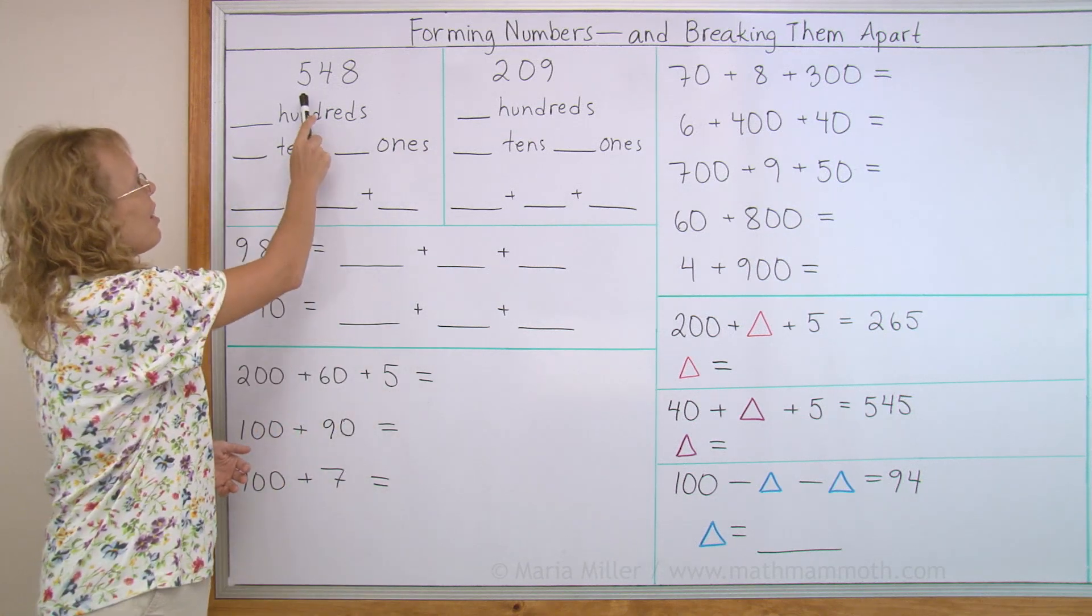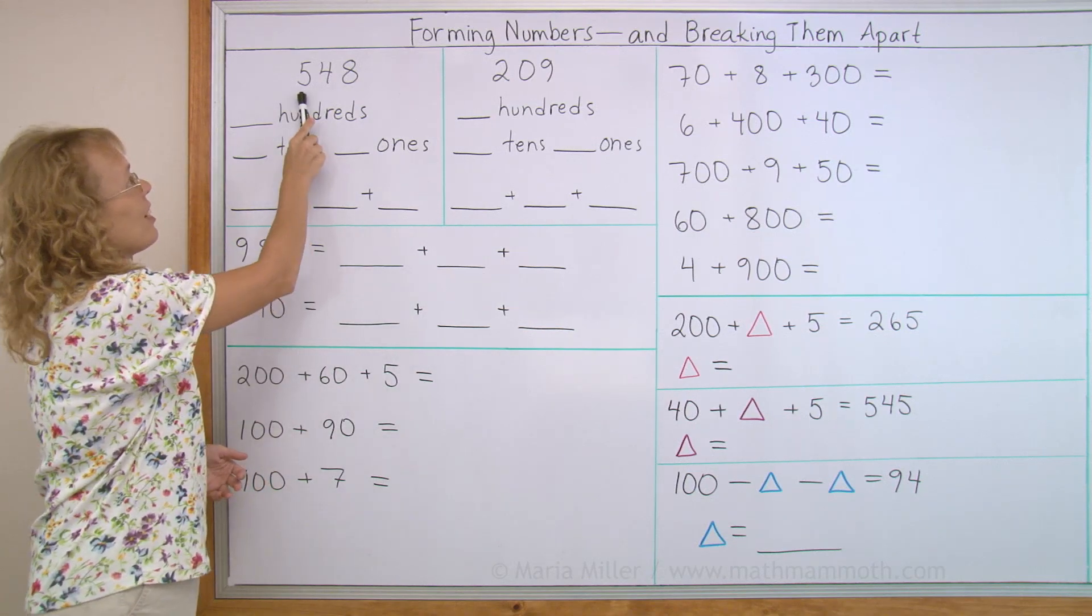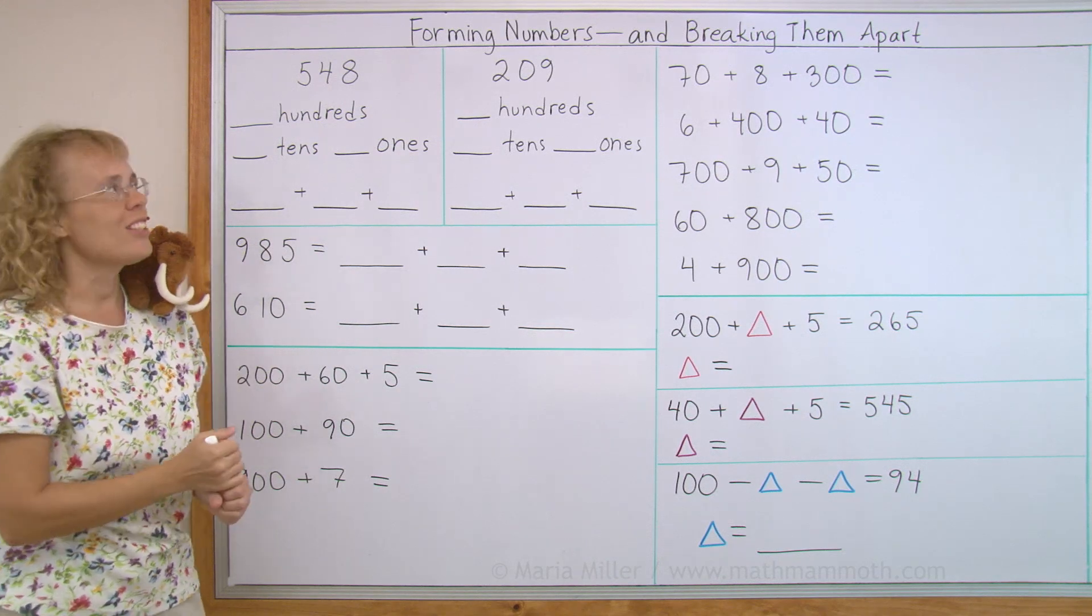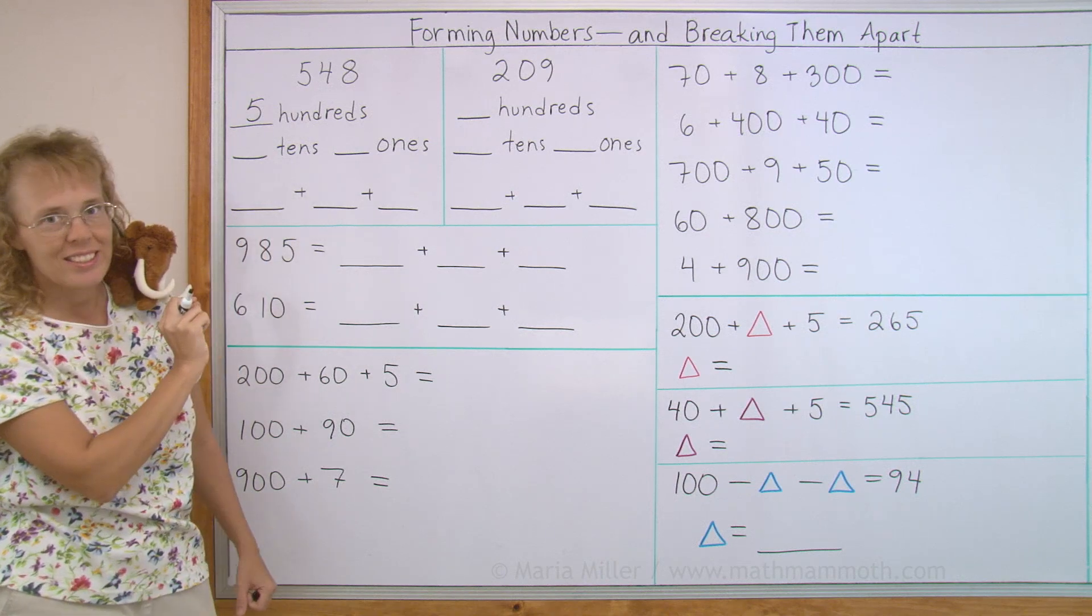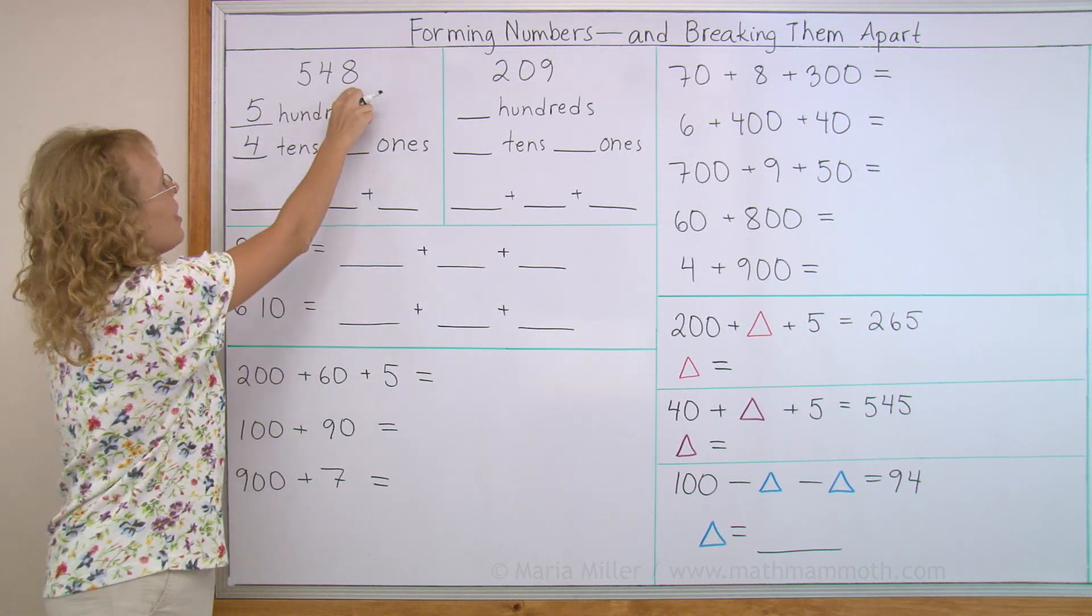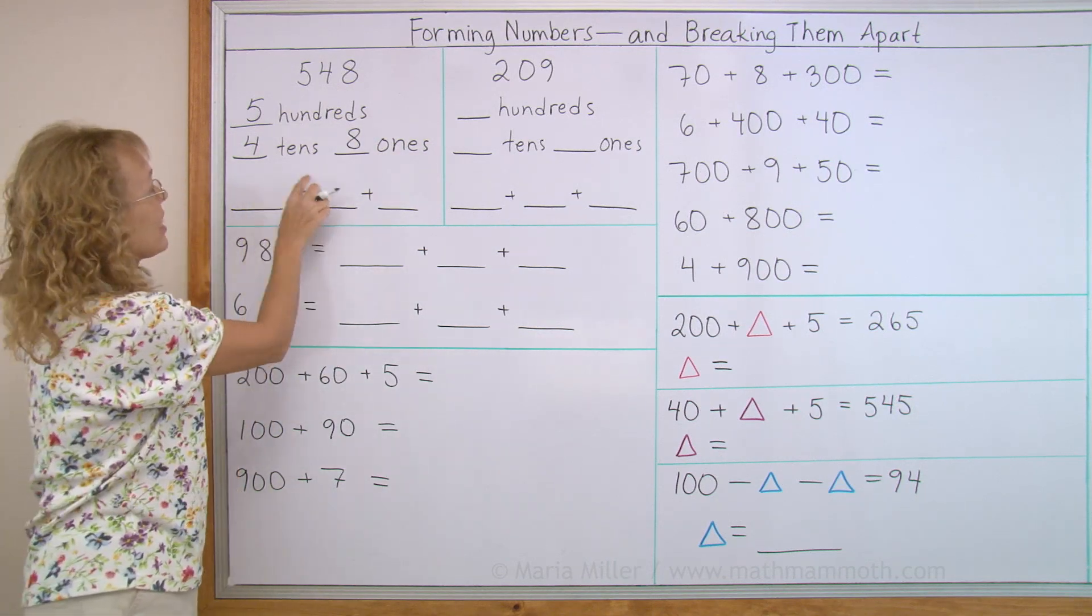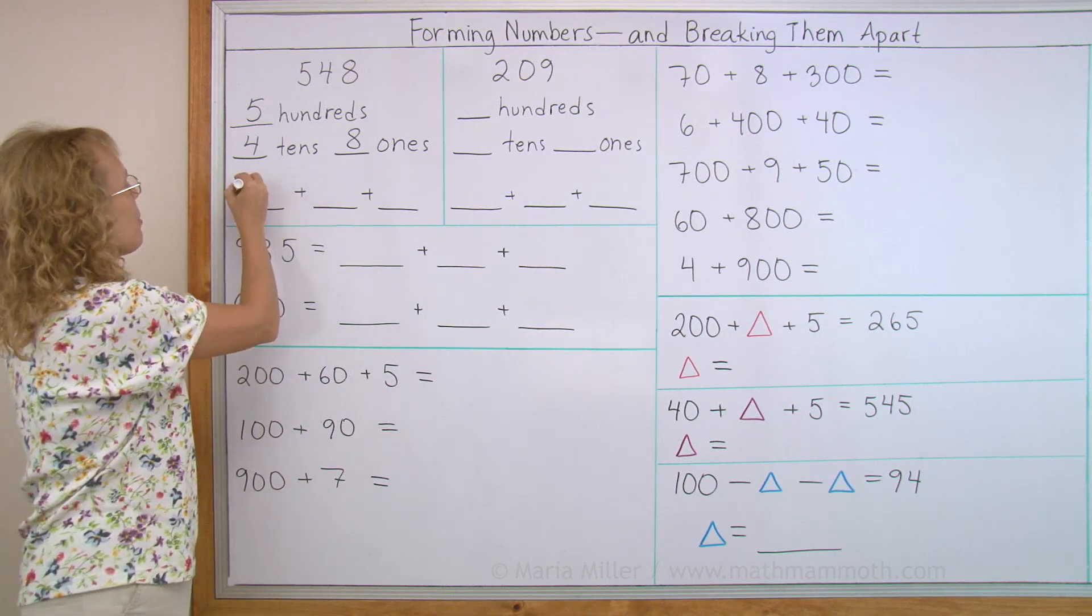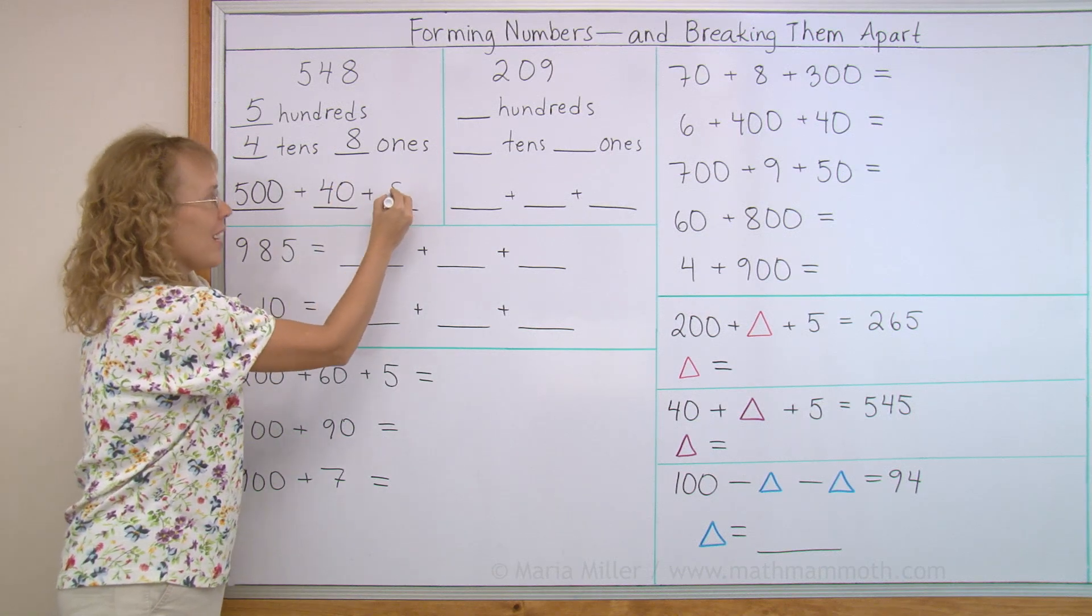For example, here I have a number. Can you read it? Five hundred forty-eight. How many hundreds does it have? Well, that's an easy question. I'm just going to put five here. It has five hundreds. How many tens? This digit tells us the tens, four tens, and then eight ones. And then we're going to write it as a sum, as an addition of its parts. The first part being five hundred, and then the forty, and then the eight.